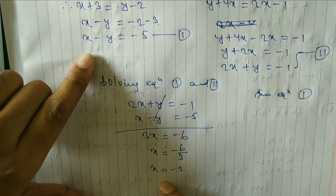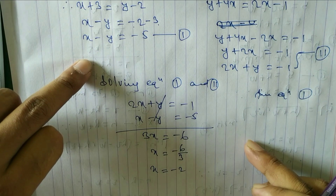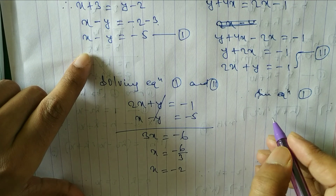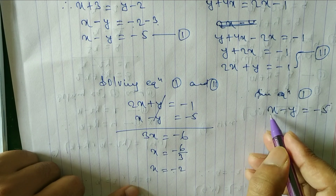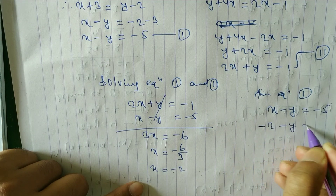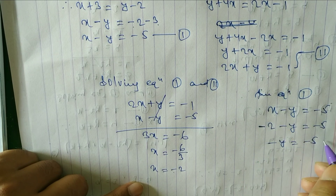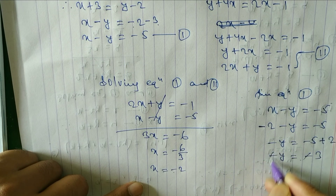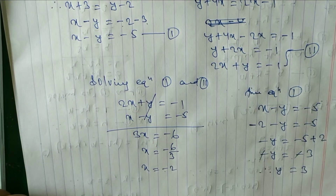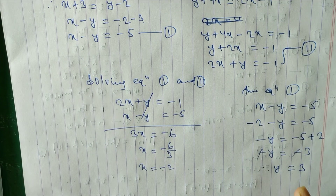Now substituting x = -2 into equation 1: -2 - y = -5. So -y = -5 + 2 = -3, therefore y = 3. The value of x is -2 and y is 3. Hope you understand question number 1.